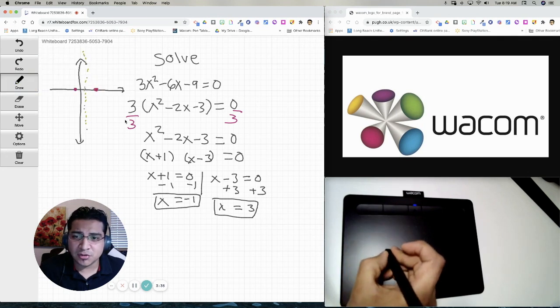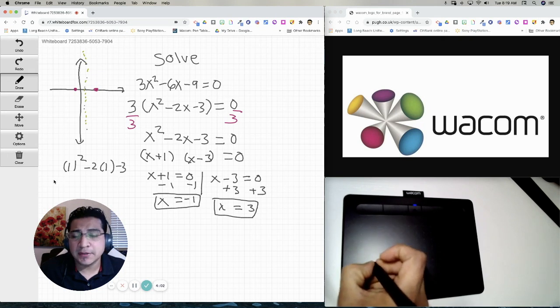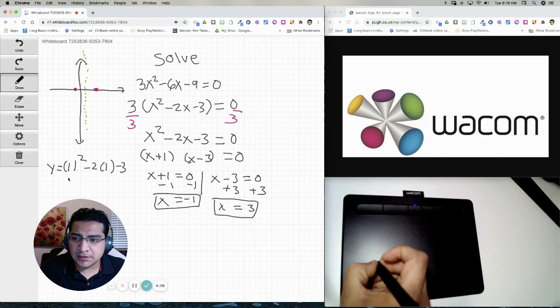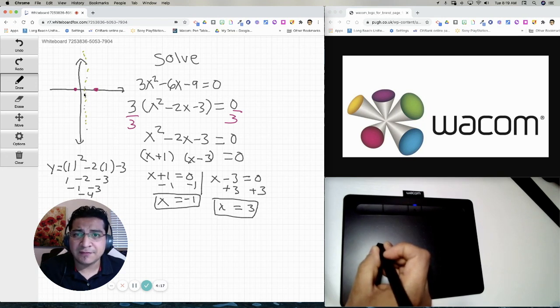And then I'm going to plug in 1, square minus 2, times 1, minus 3. And let's see what we get. Okay, so this will be y equals. And that's going to be 1, minus 2, minus 3. And that's going to be minus 1, minus 3. And that will give us negative 4. So the minimum point of this parabola is going to be negative 4.